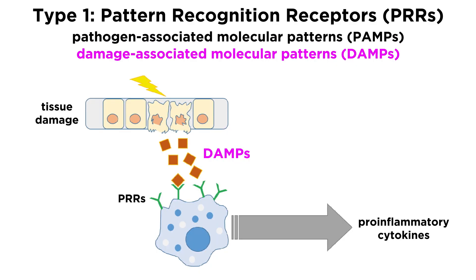DAMPs, on the other hand, are molecules made by self-cells, but are often molecules that should only be intracellular, like ATP, or the DNA-binding protein HMGB1. If a cell surface DAMP receptor is able to bind to these molecules, it's because there are dead or damaged cells nearby.